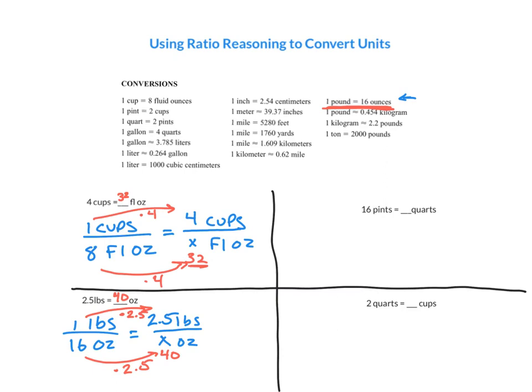Then we have another example here. 16 pints equals how many quarts. Again I go up here, I see - not there - one quart equals two pints. So again, it doesn't matter which way I put it. One quart over two pints equals quarts over pints. Remember you need to keep the same units on the top and the bottom. One quart equals some number of quarts here. Two pints equals we know 16 pints.